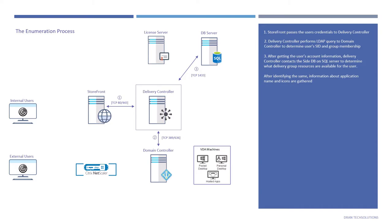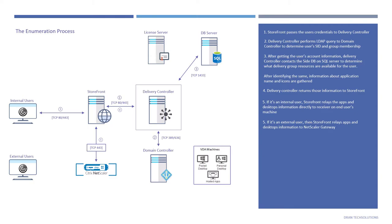After getting the user's account information, Delivery Controller contacts the site database on the SQL Server to determine what delivery group resources are available for the user. After identifying that, the application names and icons are gathered, and Delivery Controller returns that information to StoreFront. For internal users, StoreFront delivers the apps and desktop information directly to Citrix Receiver on the end user's machine. For external users, StoreFront sends the apps and desktop information to NetScaler Gateway, which proxies the StoreFront webpage and delivers it to the end user. Users should now be able to see all their apps and desktops they have access to. Enumeration process ends here.